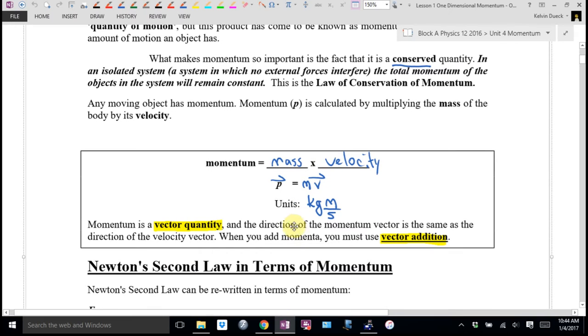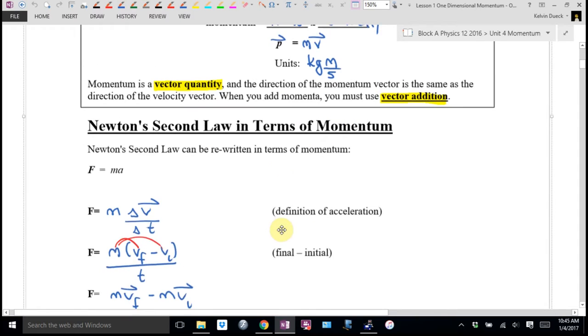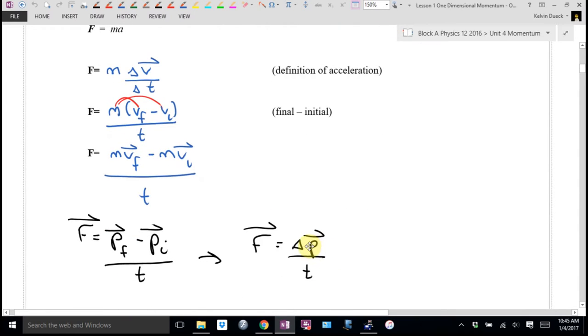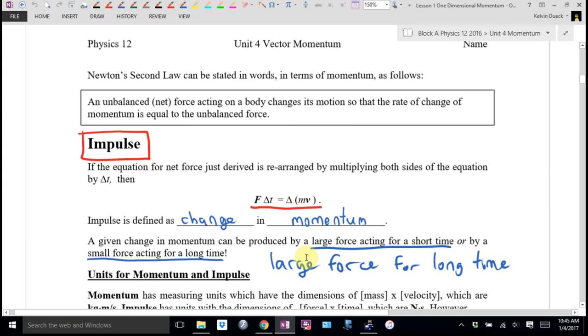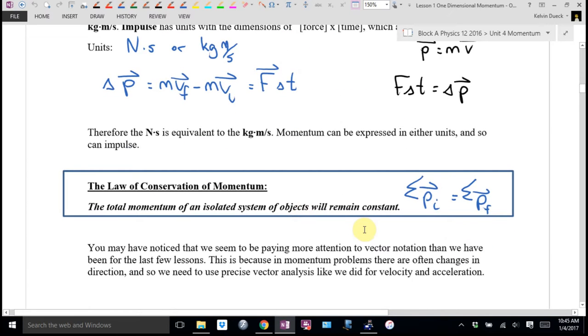Really quickly, we said momentum was mass times velocity. We said that Newton's second law could be rewritten in terms of momentum. Another way to think about force is impulse, change in momentum over time, which allowed us to rewrite that as force times time equals impulse or change in momentum. We talked about the law of conservation of momentum. I tended to write that as the sum of all the momentum beforehand equals the sum of all momentum afterwards.